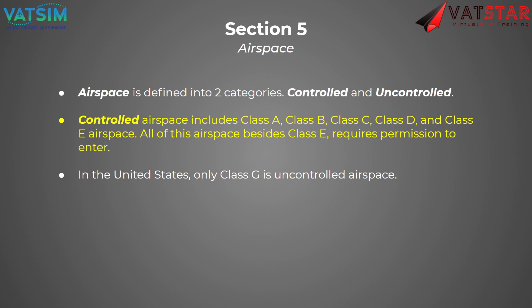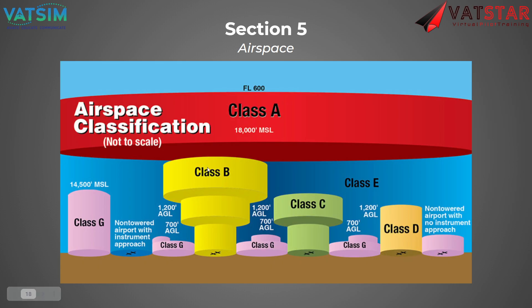Airspace is defined in two categories: controlled and uncontrolled. Controlled airspace includes Alpha, Bravo, Charlie, Delta, and Echo — all of this airspace besides Echo requires permission to enter. In the United States, only Class Gulf is uncontrolled airspace. As for altitude definitions: Class Alpha is from 18,000 to 60,000 feet. Class Bravo is typically from the surface to 7,000 AGL. Class Gulf is typically from the surface to 700 AGL, in some cases up to 14,500. Class Charlie is typically from the surface to 4,000 AGL. Class Delta is typically from the surface to 2,500 AGL.